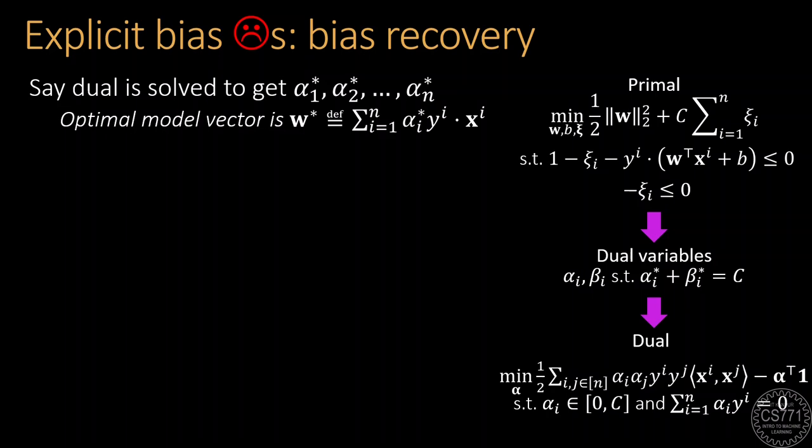We had seen that at the optimum alpha_i and beta_i always add up to C and we had derived the dual by eliminating beta_i. To find the optimal value of the bias term, we need to use a new result known as complementary slackness.